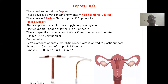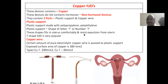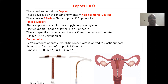Copper IUDs consist of two parts. Part one is a T-shaped plastic support made with polypropylene or polyethylene — this white-color plastic support. Another part is the copper wire. Shape is T-shape or 7-shape. T-shape fits in the uterus comfortably and resists easy expulsion, so it remains there for a prolonged period. T-shape IUD is very popular. A certain amount of pure electrically-grade copper wire is weaved onto the plastic support. The exposed surface area of the copper is 380 or 200 square mm. Size is about three centimeters, approximately 30 mm.